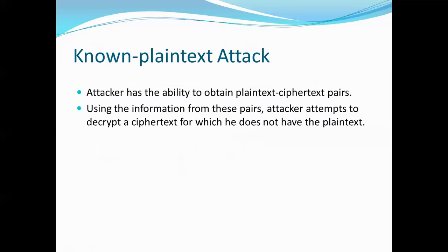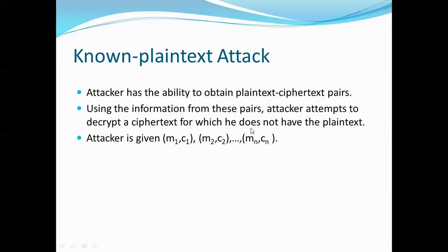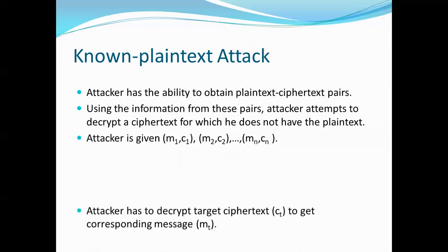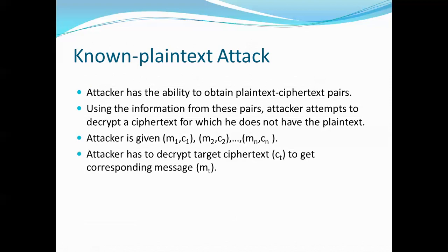In a known plaintext attack, the attacker has the ability to obtain plaintext-ciphertext pairs: (M1, C1), (M2, C2), ..., (Mn, Cn), where M is the plaintext and C is the ciphertext. Using this information, the attacker tries to decrypt a target ciphertext CT for which he does not know the corresponding message. If he can successfully decrypt CT to get the actual message MT using his analysis of the known pairs, that is a successful known plaintext attack.